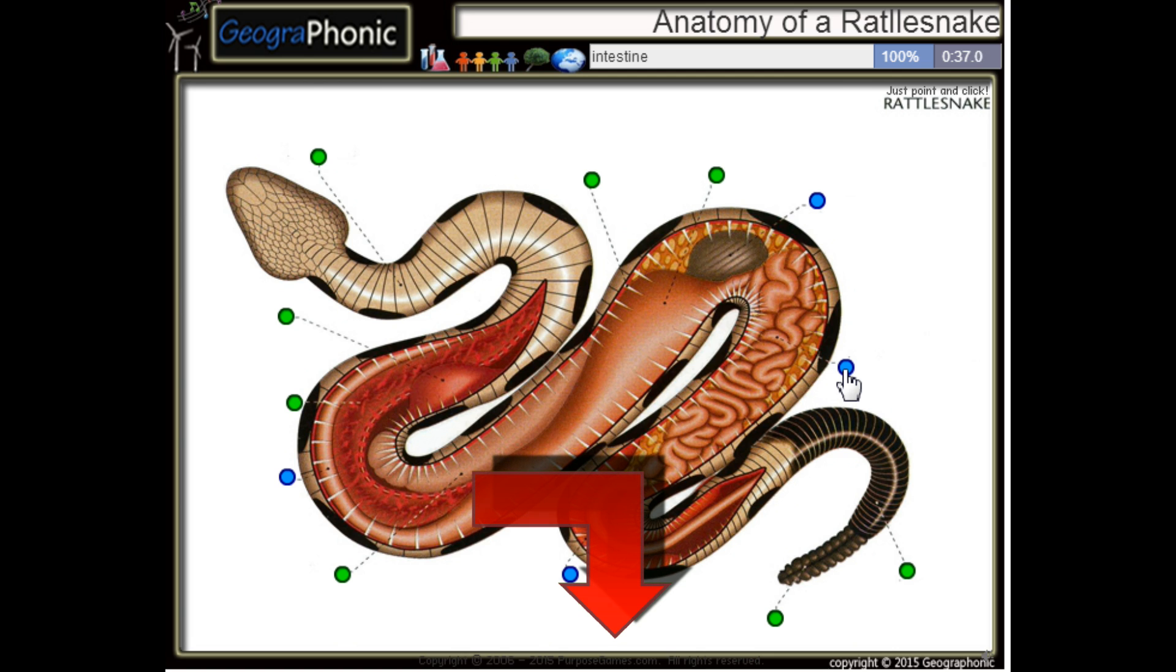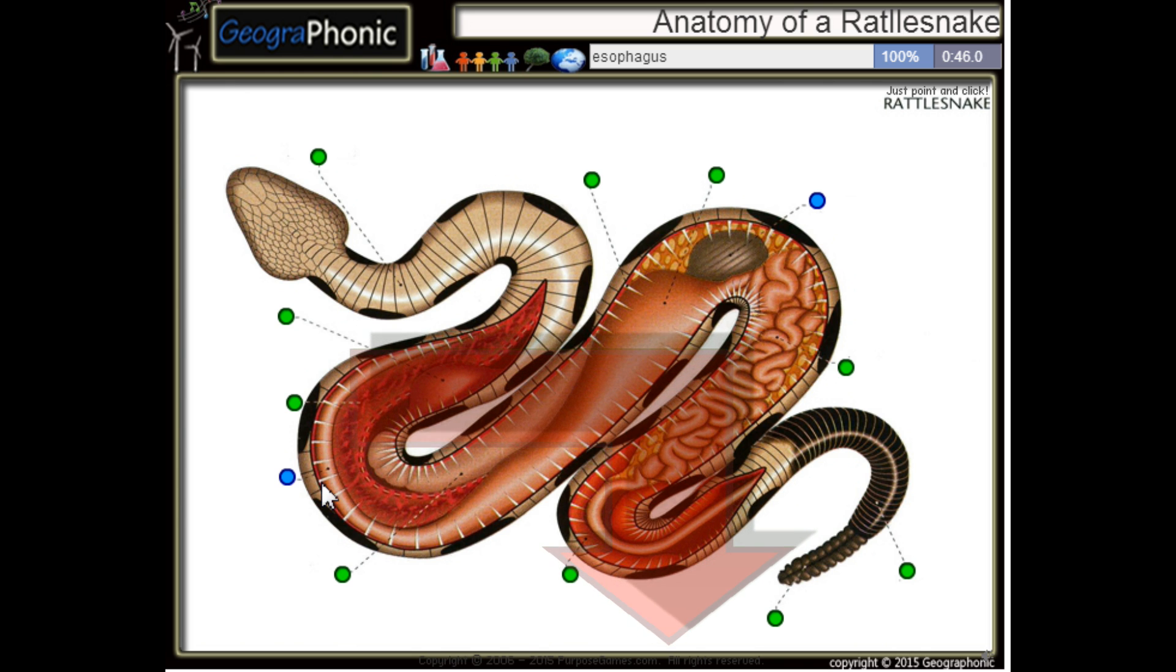This is the intestine. This is the kidney of the snake. This is the esophagus. And this is the gallbladder.